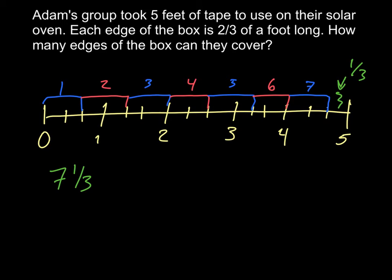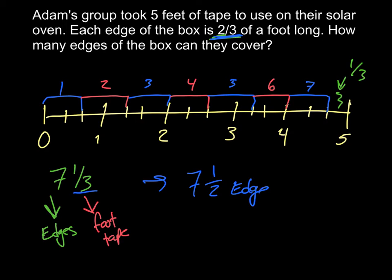Remember that we're looking at each edge of the box is 2/3, and if we have 1/3, so what that really means is we have 7 edges and 1/3 of a foot of tape. So that's not the same thing. What we're going to need to do with that is we can look at it and say that 1/3 here is half of one of the edges, so really this can cover 7 and 1/2 edges of the box.